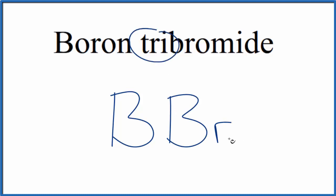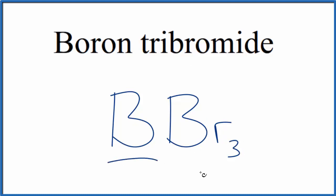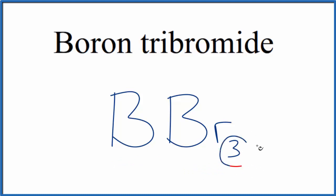The prefix 'tri' means we have three bromine atoms, so the formula for boron tribromide is BBr₃. If you were given the formula BBr₃ and asked to write the name, you'd recognize boron as a metalloid and bromine as a non-metal, so you'd use the prefix 'tri' to show that there are three bromine atoms.